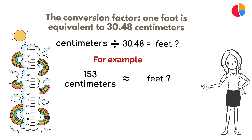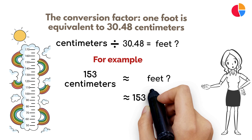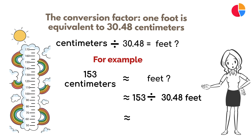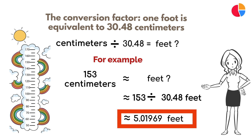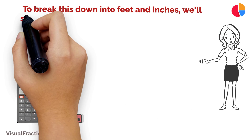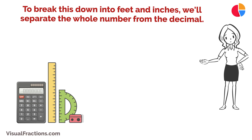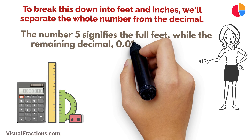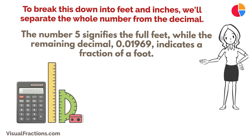We begin by dividing 153 by the conversion factor of 30.48. The result is approximately 5.01969 feet. To break this down into feet and inches, we'll separate the whole number from the decimal. The number 5 signifies the full feet, while the remaining decimal 0.01969 indicates a fraction of a foot.